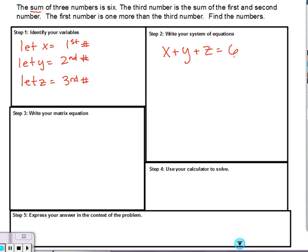The second one's a little trickier. It says the third number, which is z, is the sum - I know that means plus, is is an equal sign. So z is going to equal the sum of the first and second numbers. What are my first and second numbers? X and y. So z equals x plus y.